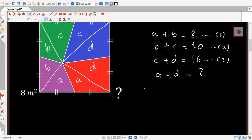Okay, so equation number 1 minus equation number 2 plus equation number 3. That will give us a plus b minus b minus c plus c plus d. b is going to be canceled, c is going to be canceled, and we're going to be left with a plus d.